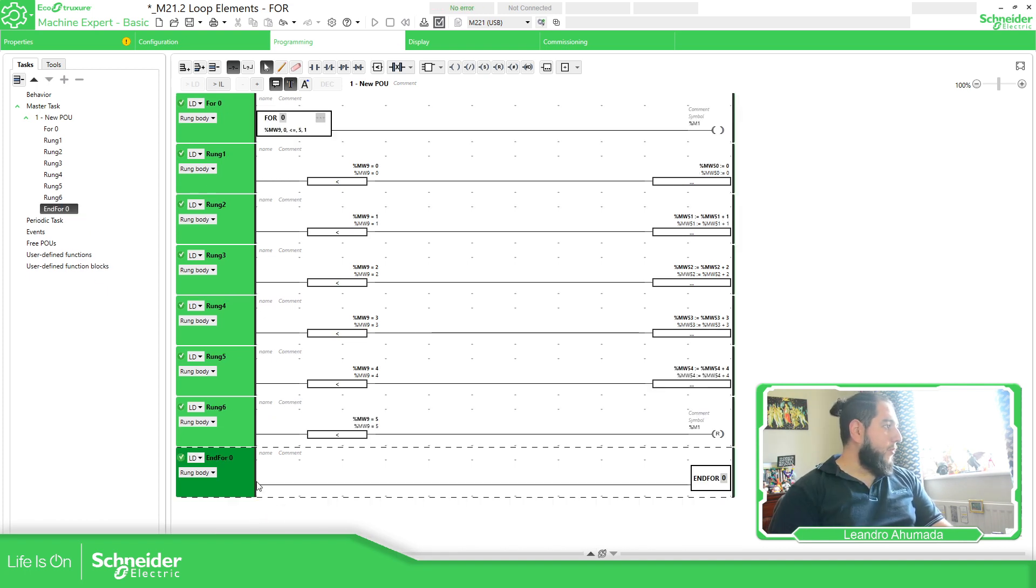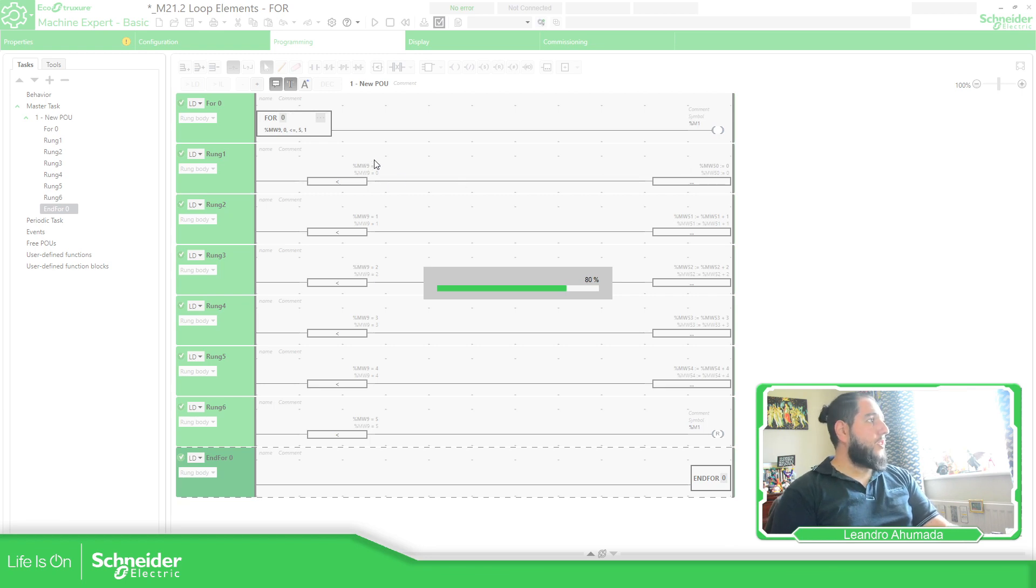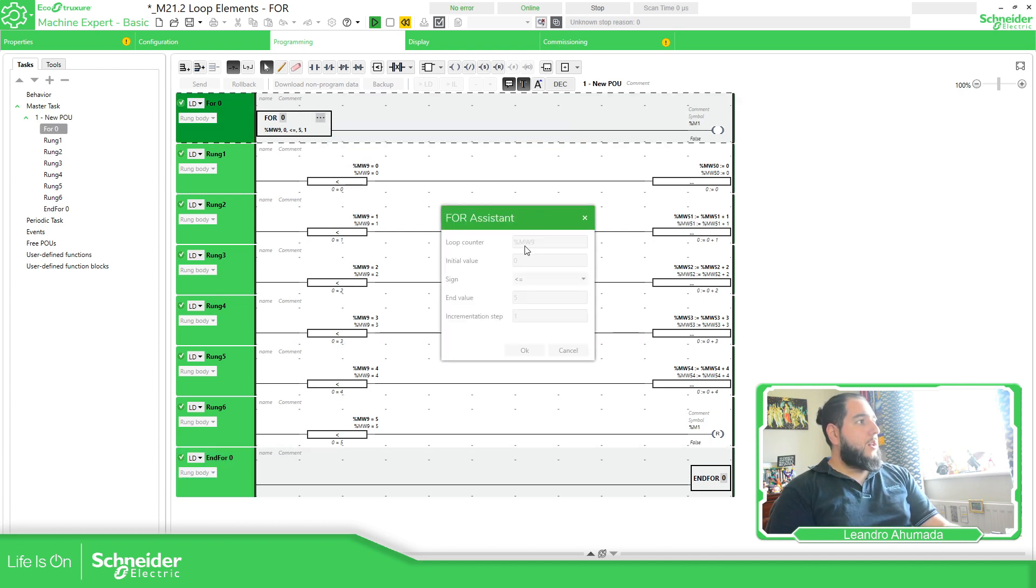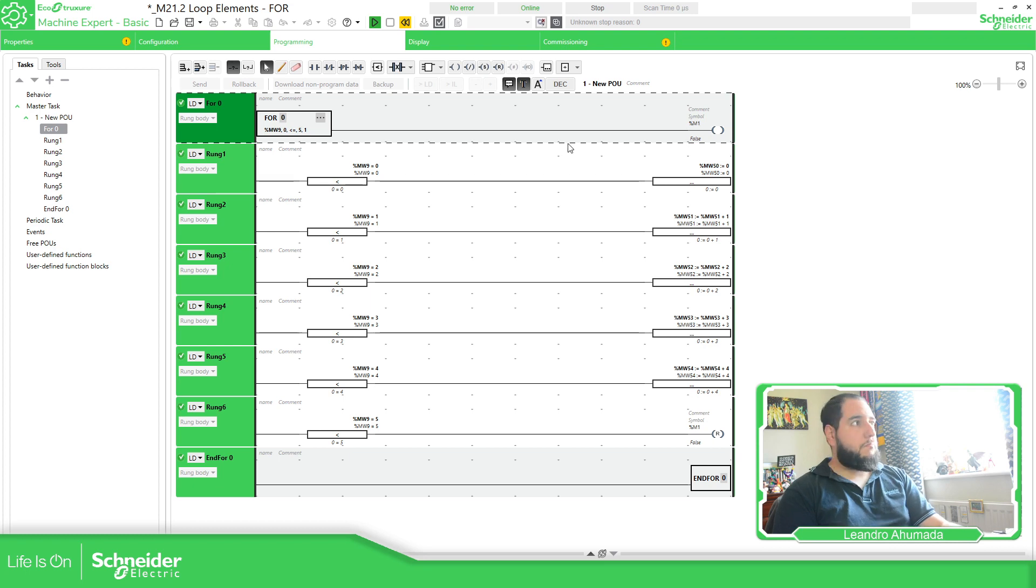So if we simulate this, it just made a comparison in each step. So it will reach basically this configuration is using the %MW9. The initial value is going to be zero. Every time it executes, it's going to be zero. And then it will increment by one until it reaches the value five. So just to show you how it's going to be incrementing, I just add some variables over here.